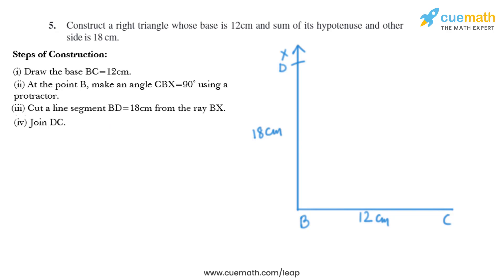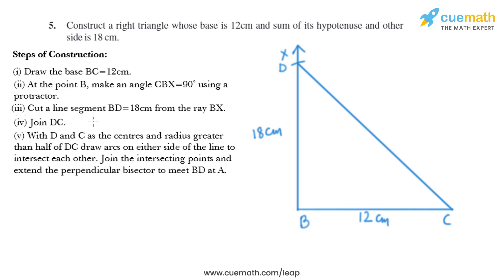Now in the next step we need to join D and C, so we will join D and C. Now we need to take D and C as the center and radius greater than half of DC, draw arcs on either side of the line to intersect each other.